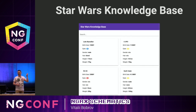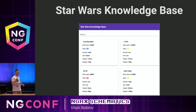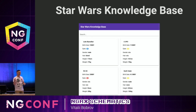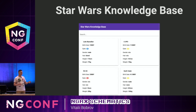It should look like this — a simple application with cards containing information about Star Wars heroes, like name, date of birth, height, weight, and so on. For that, we're going to use Angular Material Design so we don't need to worry about components, buttons, and colors. And I'm going to use the SWAPI — this is an open-source Star Wars database available for free without any registration.